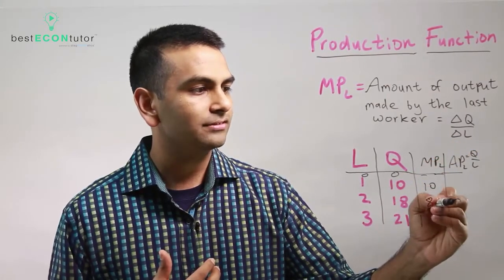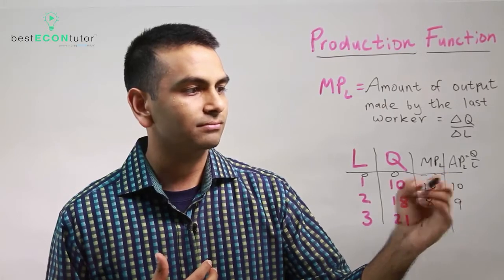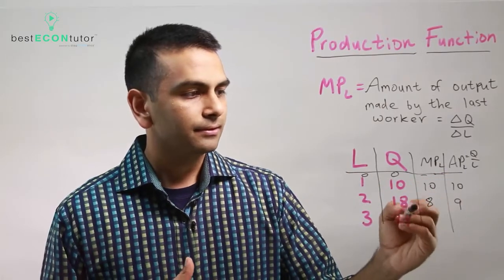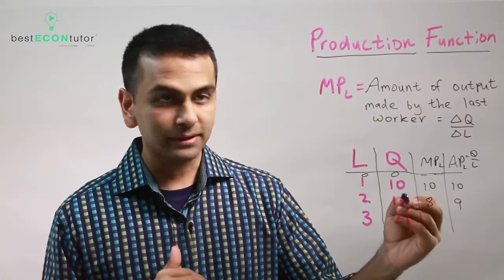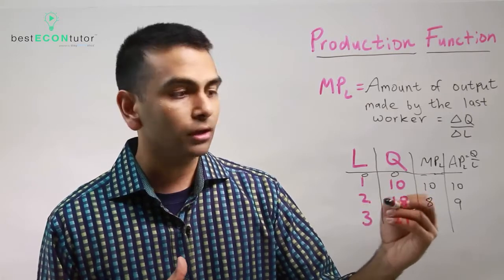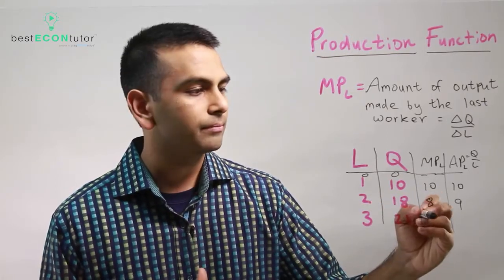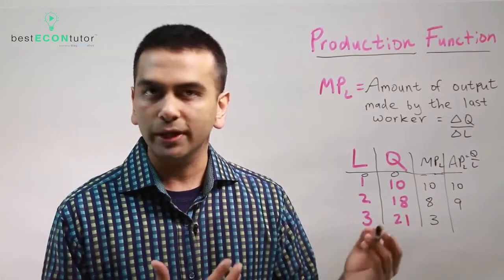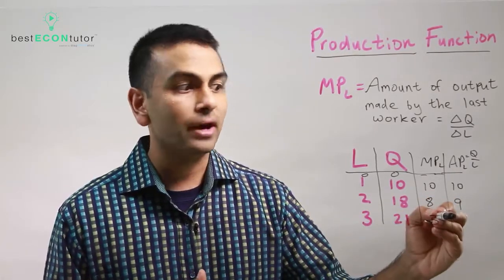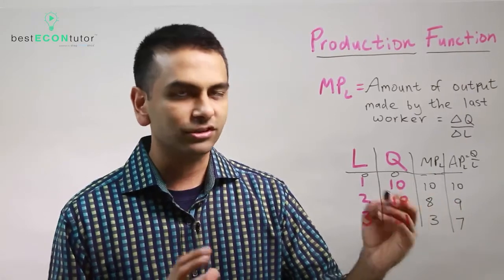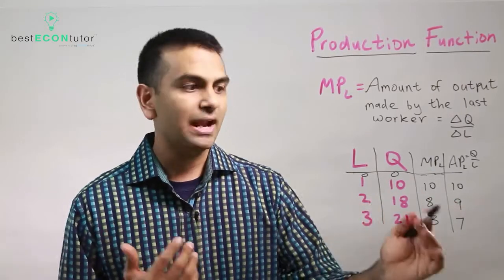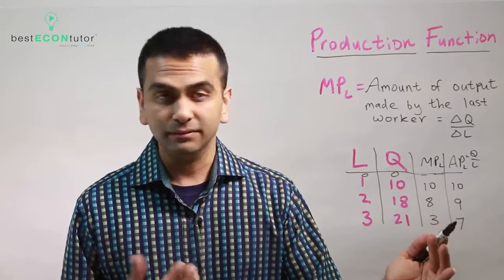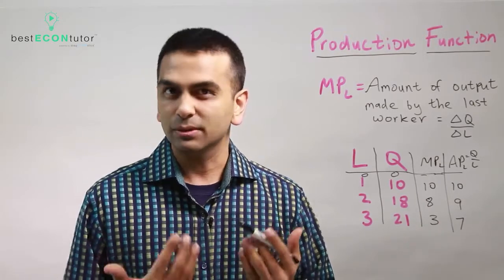On average here that is 9, and for one worker that's 10. If we're doing the marginal, the third worker alone made 3 because it went from 18 to 21. But with the average, 3 workers made 21, so 21 divided by 3 means each on average made 7. Just because you know the APL, meaning on average each worker made 7, doesn't tell you the breakdown of how much each worker made.